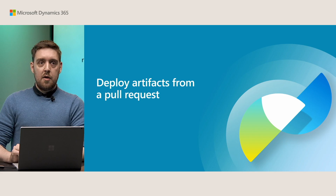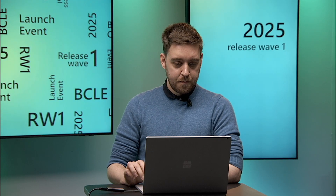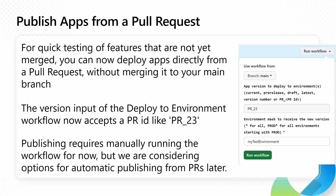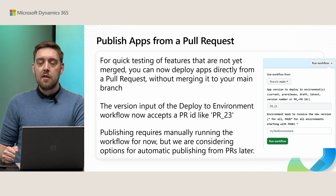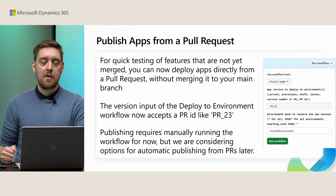In this next topic, I want to show you how we can deploy artifacts from a pull request — this was a request from a partner. We now have a new option for deploying pull request changes directly to an online environment. This is useful for quick testing in case you need to test in your online environment before you complete your PR with a code review and merge it into your main branch.